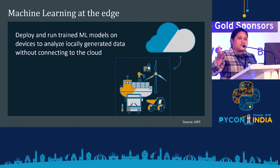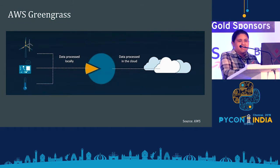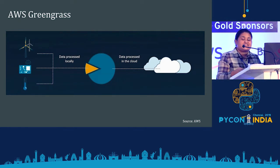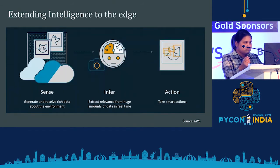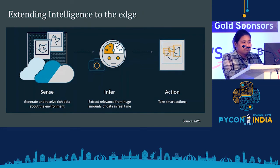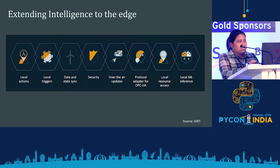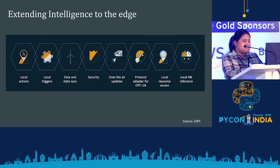Machine learning on the edge means you train a model on the cloud and deploy it to the edge for inferencing. AWS Greengrass gives the capability of extending cloud computing capabilities on a very resource-constrained device. Data is processed locally and then the processed data is sent to the cloud. Extending intelligence to the edge means: sense (done by sensors), infer from the data by performing analytical functions, then act on the information received. This is the typical high-level end-to-end pipeline for extending intelligence to the edge.